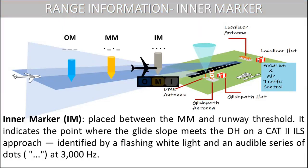Inner marker is placed between the middle marker and runway threshold. It indicates the point where the glide slope meets the decision height on a CAT-2 ILS approach. Inner marker is identified by a flashing white light and an audible series of dots at 3,000 Hz.